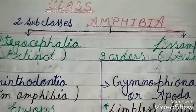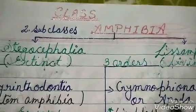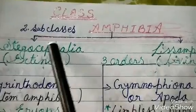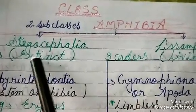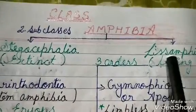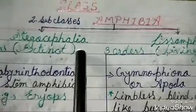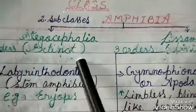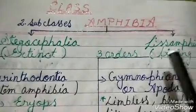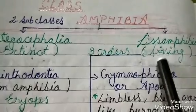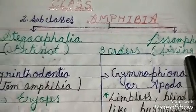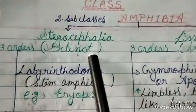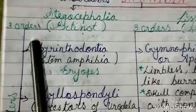Now I'm going to tell you about the classification of Amphibia. The class Amphibia is divided into two subclasses: Stegocephalia and Lissamphibia. Stegocephalia refers to the extinct amphibians, while Lissamphibia includes the living ones.